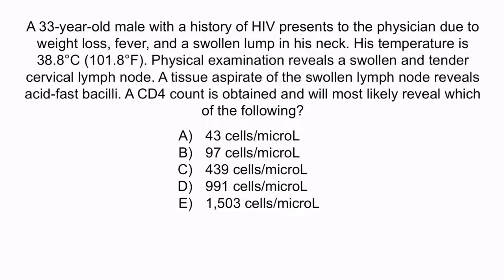From the question stem, notice that this patient has HIV, weight loss, fever, cervical lymphadenitis — deduced from the swollen lump in his neck — and that a tissue aspirate revealed acid-fast bacilli. Collectively, these findings are highly suggestive of MAC, so the correct answer is A: 43 cells per microliter.